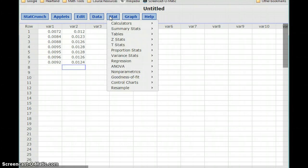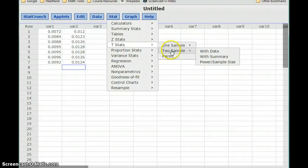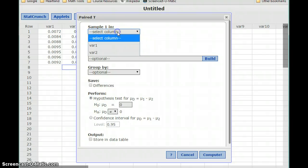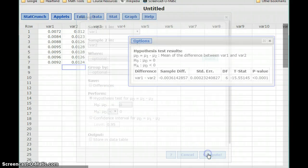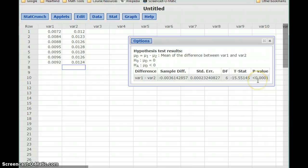So with my data typed into StatCrunch, I'm going to select stat, t-stats, and then instead of two-sample, since I'm using the paired t-test, I'm going to select paired. We'll select the data in column 1, data in column 2. We'll set our alternative hypothesis to be less than, or I guess actually how this shortens this as mu d, so representing the difference of those two population means. Click Compute, and we get a p-value less than 0.0001.